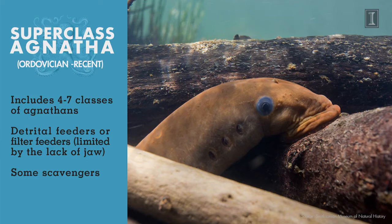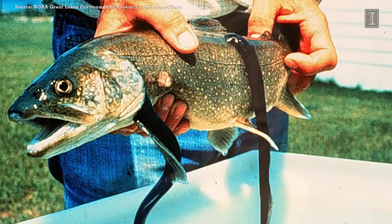Agnathans are primarily filter feeders or detrital feeders. Without a well-functioning jaw, chewing is difficult, so they typically scoop up detritus or sediment from the ocean bottom and filter out nutrients, or swim through the water column picking up plankton. Some have even been observed attaching to whale carcasses, tying themselves in a knot to pull off a chunk of meat — remarkable feeding behavior for an animal without a jaw.